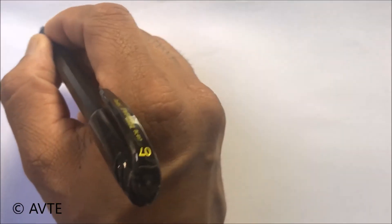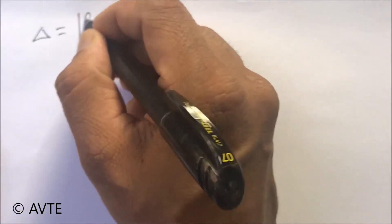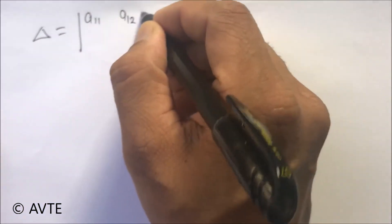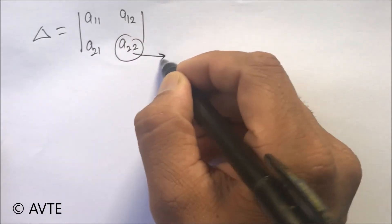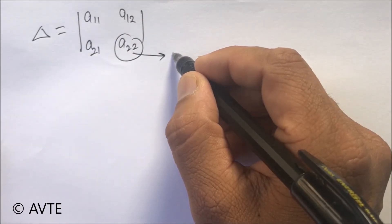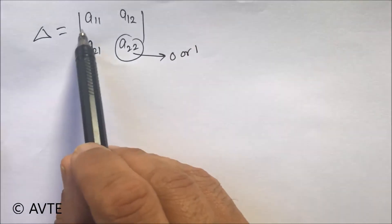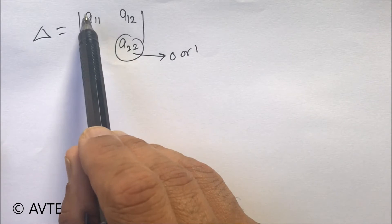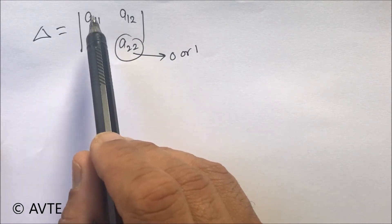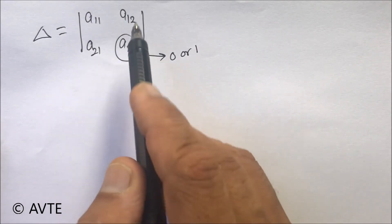They are talking about 2 cross 2 determinants. Each place can be occupied with either 0 or 1. So every place has a possibility to occupy 0 and 1 in two ways and it is independent of all the other places.